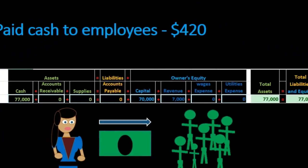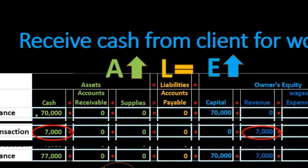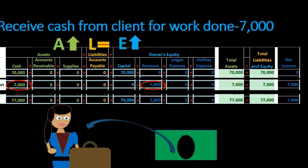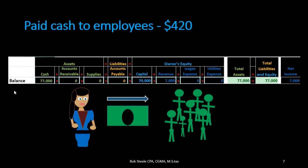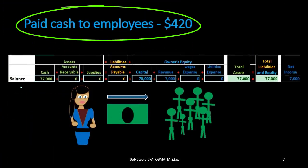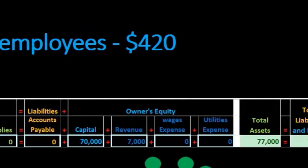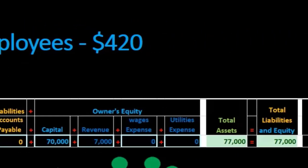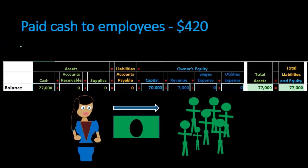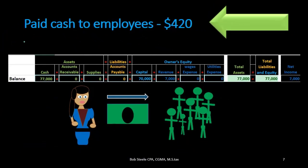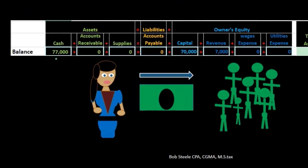For the next transaction, we eliminate the older beginning balance and focus on the most recent ending balance as our new starting point. The same process applies: beginning balance, new activity, new balance. This transaction: paid cash to employees. Is cash affected? The keyword is 'paid,' therefore cash is going down — we decrease cash.